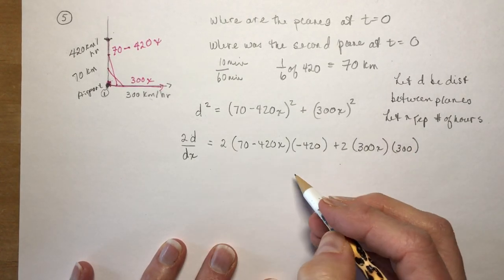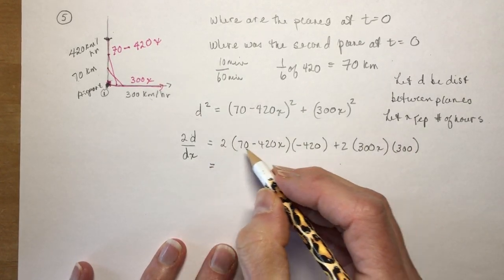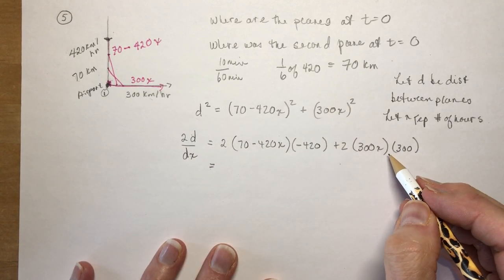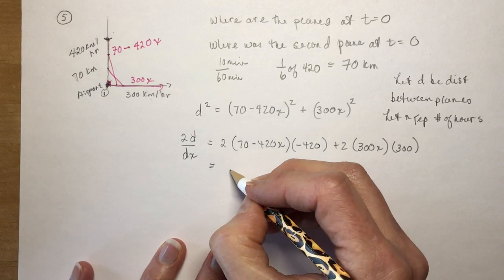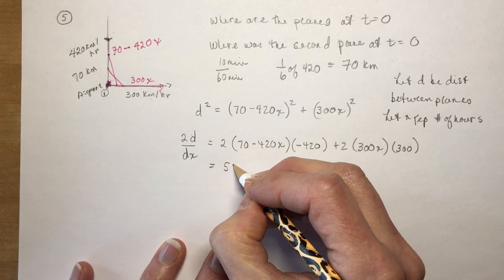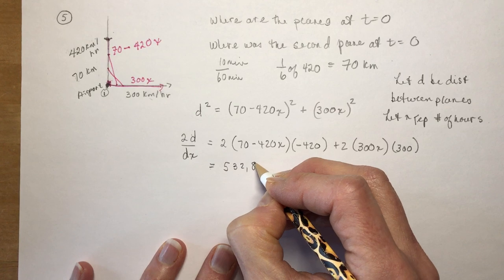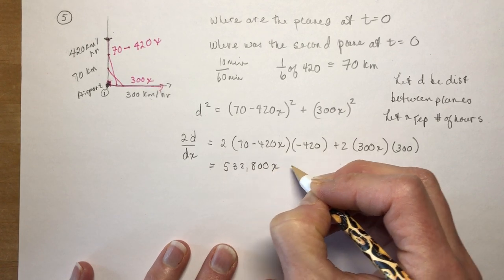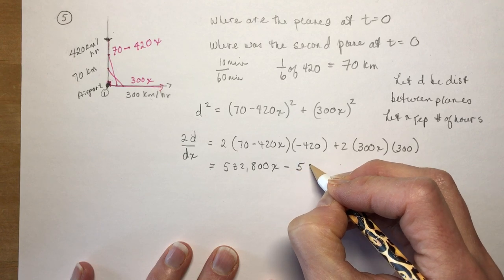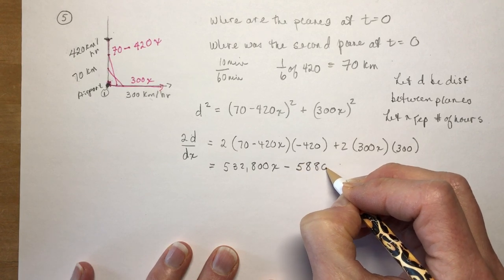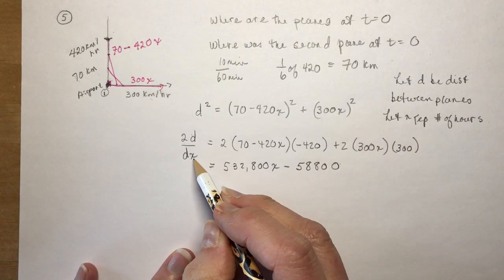Okay so now the next part is to just expand all this and I did it somewhere here. It's going to look something like this. So do this work on your own, it's just calculations. So I get 532,800x minus 58,800. So that's 2d(dd/dx).